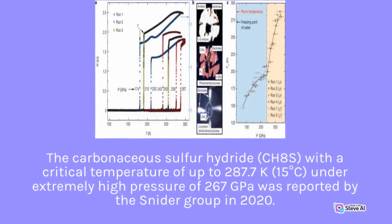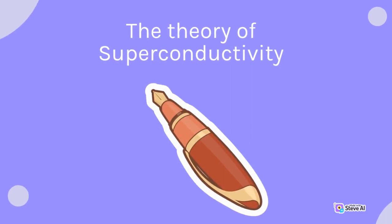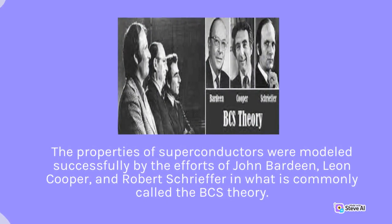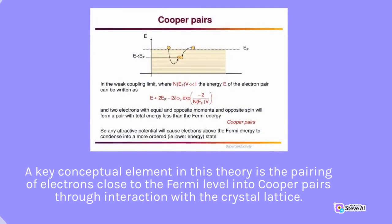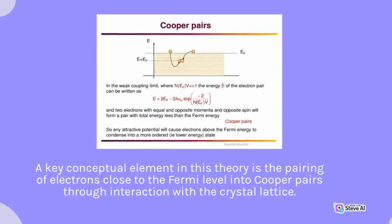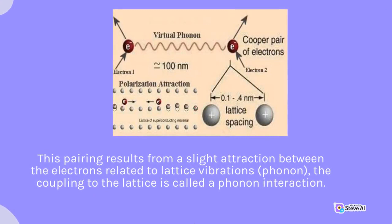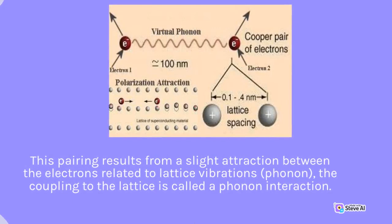The theory of superconductors: the properties of superconductors were modeled successfully by the efforts of John Bardeen, Leon Cooper, and Robert Schrieffer in what is commonly called the BCS theory. A key conceptual element in this theory is the pairing of electrons close to the Fermi level into Cooper pairs through interaction with the crystal lattice. This pairing results from a slight attraction between the electrons related to lattice vibrations, or phonons. The coupling to the lattice is called a phonon interaction.